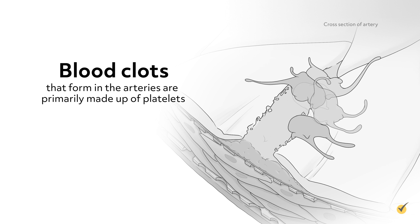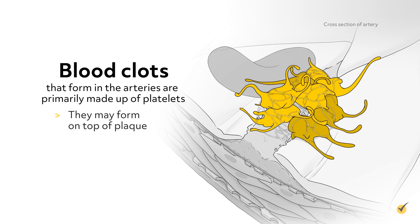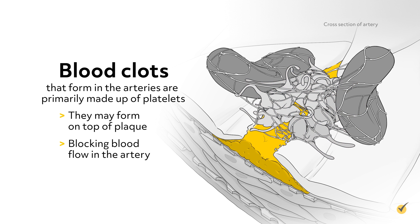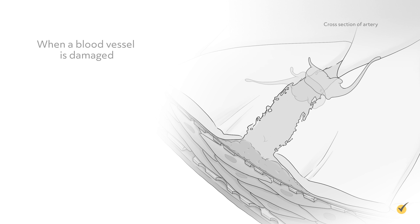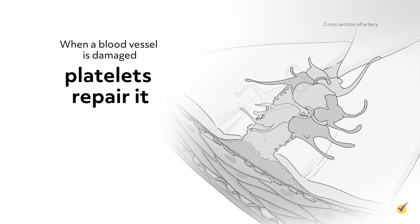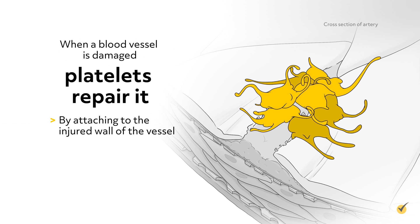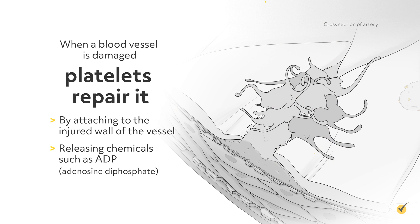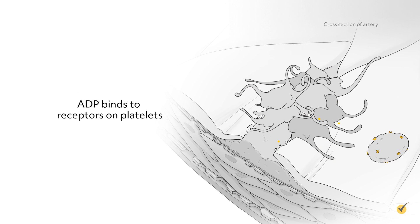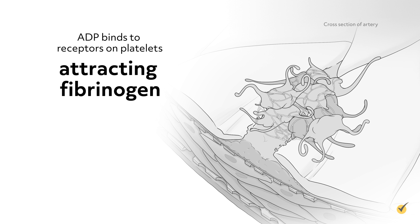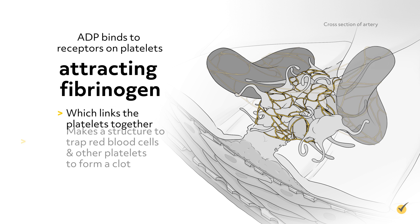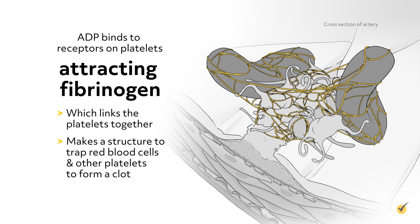Blood clots that form in the arteries are primarily made up of platelets. They may form on top of plaque, blocking blood flow in the artery, or they may form on heart walls and valves and travel to other parts of the body. When a blood vessel is damaged, platelets repair it by attaching to the injured wall of the vessel, releasing chemicals such as ADP, or adenosine diphosphate. ADP binds to receptors on platelets, attracting fibrinogen, which links the platelets together and makes a structure to trap red blood cells and other platelets to form a clot.